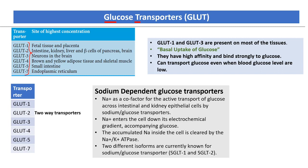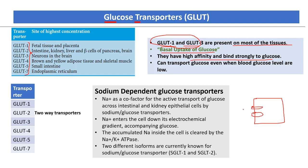GLUT1 and GLUT3 are glucose transporters present on most tissues. They mediate the basal uptake of glucose and have high affinity for glucose, binding to it strongly. They can transport glucose even when blood glucose levels are low, making them the basal transporters that ensure cells receive glucose under low blood glucose conditions.